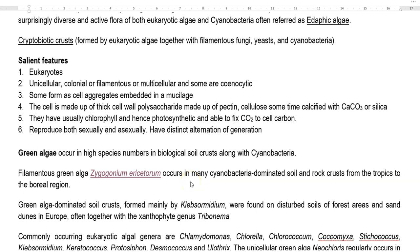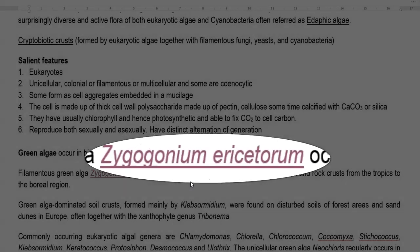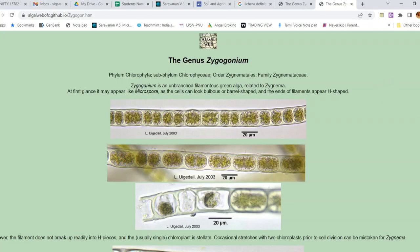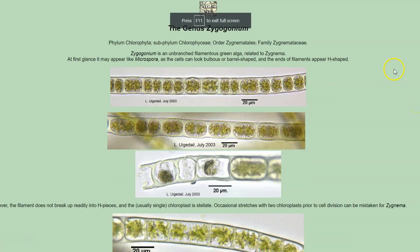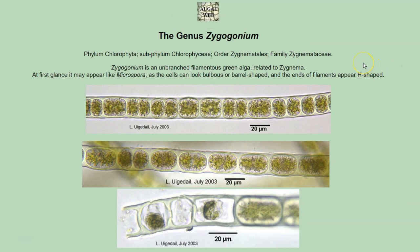Some dominating green algae present in various environments: the first is the filamentous green algae Zygogonium ericetorum, which commonly occurs in soil and rock crusts along with cyanobacteria. They are usually present in environments such as tropical as well as boreal regions, and this is the kind of green algae that dominates in boreal regions along with cyanobacteria.